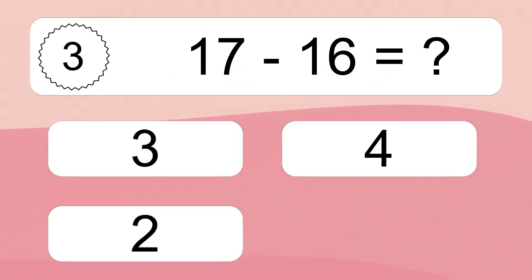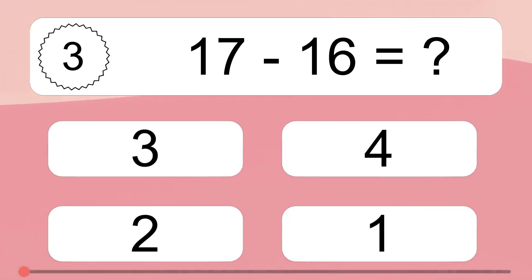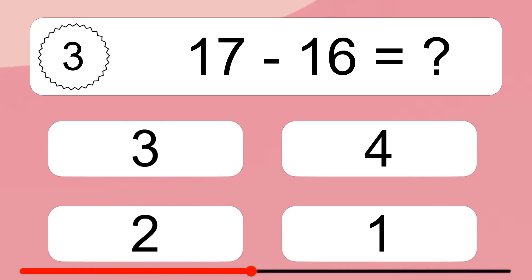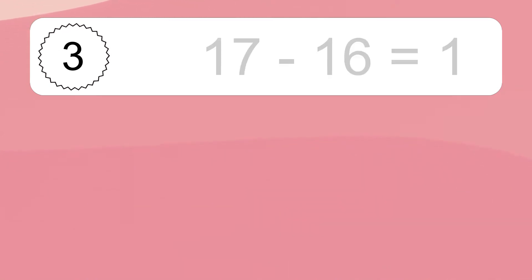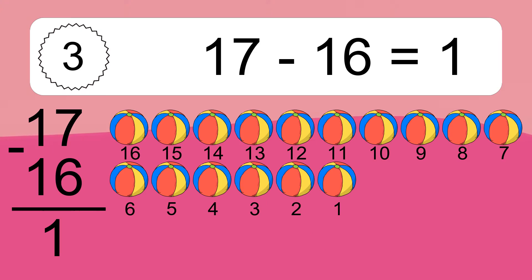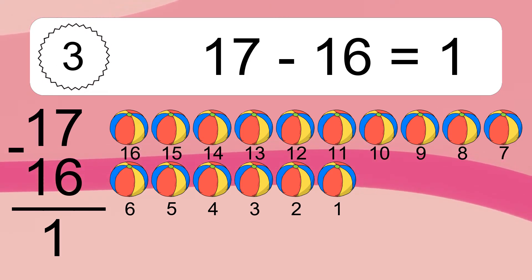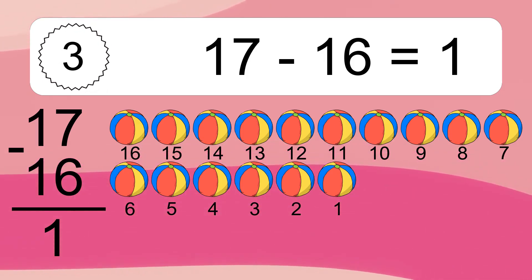17 minus 16 equals what? 17 minus 16 equals 1. Let's count it: 16, 15, 14, 13, 12, 11, 10, 9, 8, 7, 6, 5, 4, 3, 2, 1.